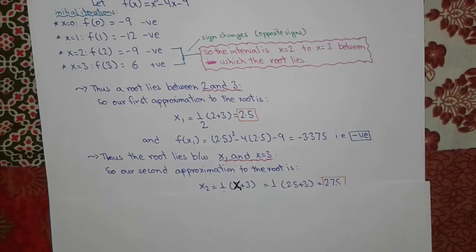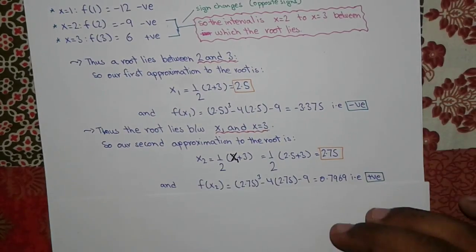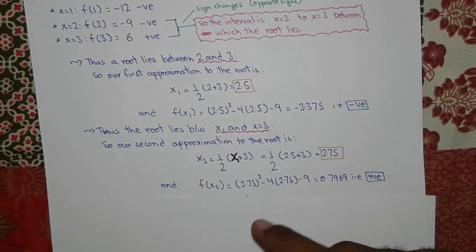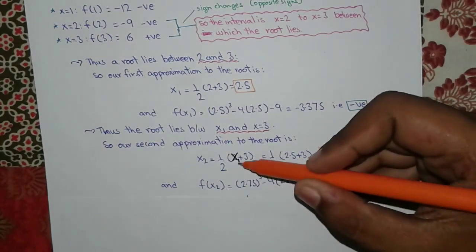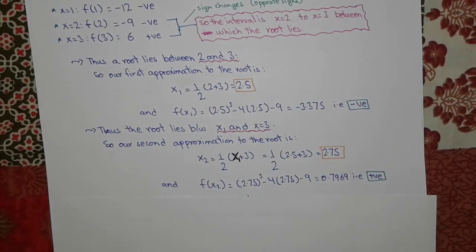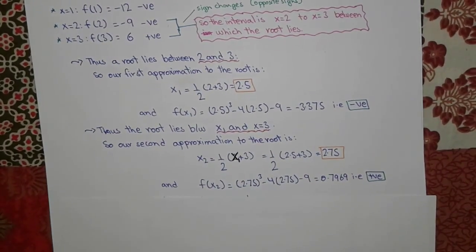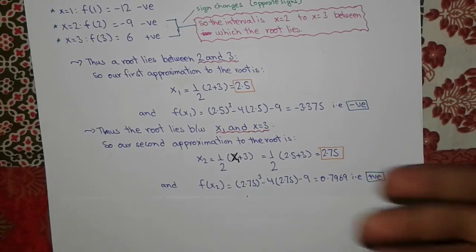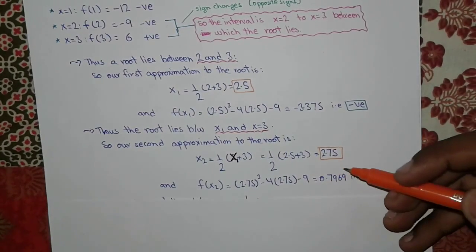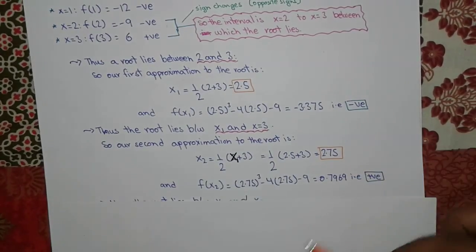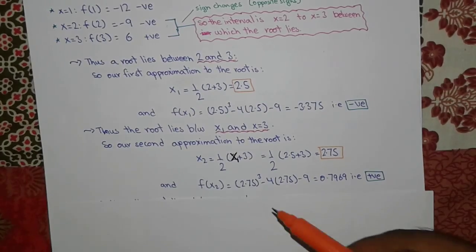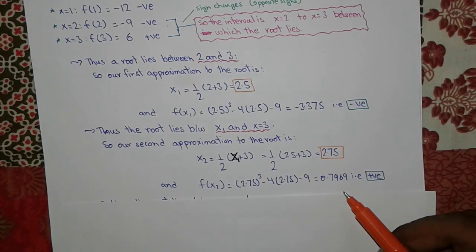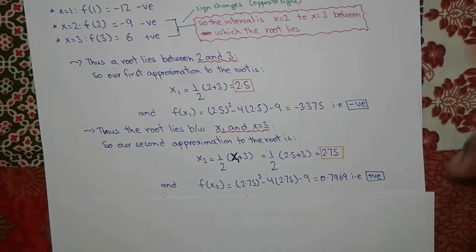Our second approximation to the root is x₂ = ½(x₁ + 3) = ½(2.5 + 3) = 2.75. We now check f(x₂) by substituting into the equation, and it comes out to +0.7969, which is positive.